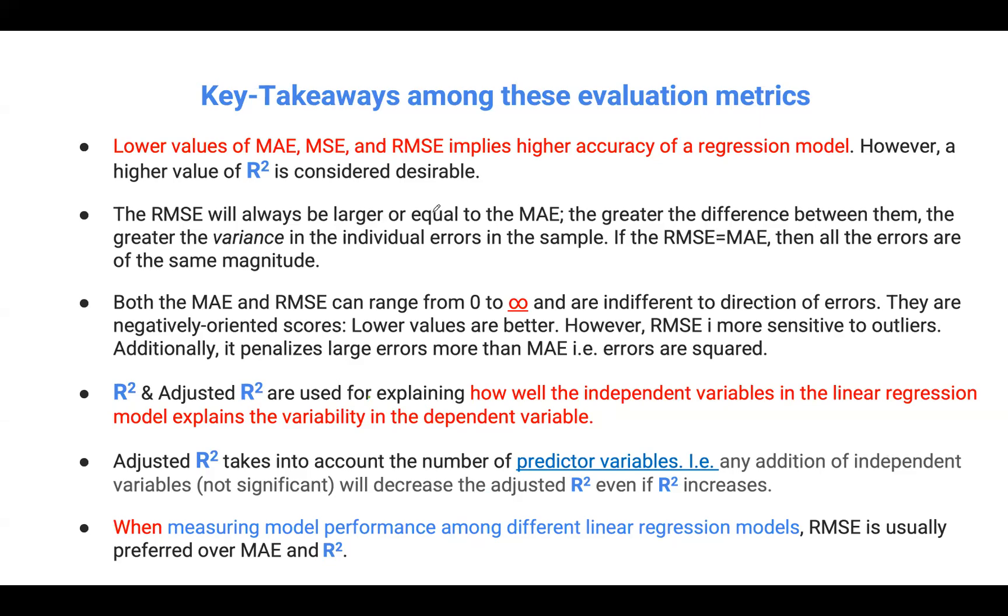Let's look at the key takeaways when selecting evaluation metrics that we've already looked at. Except R squared, the lower values of mean absolute error, mean standard error, R squared error, and RMSE usually implies a high accuracy of a regression model. However, when you're looking at R squared, higher values are deemed desirable.